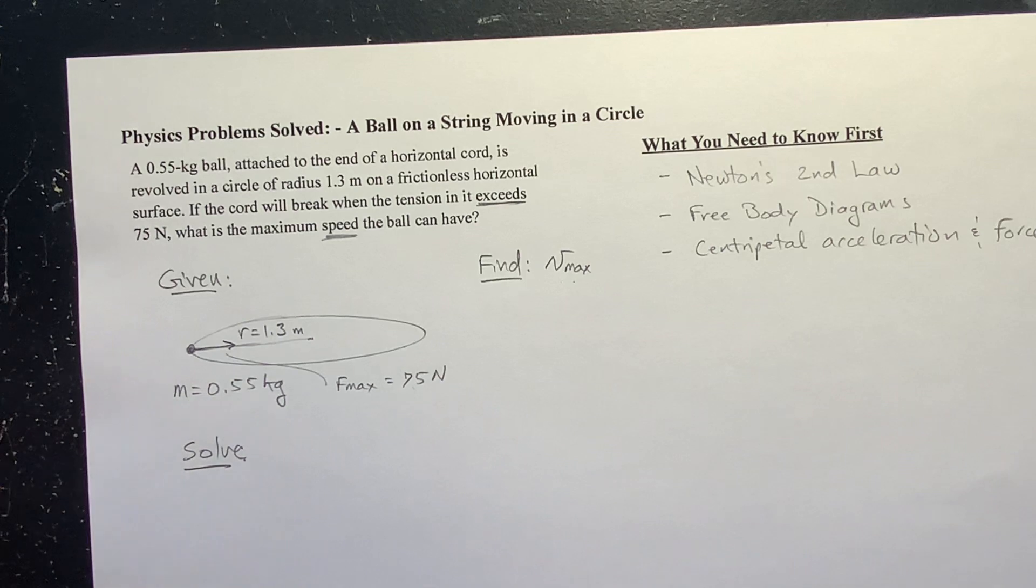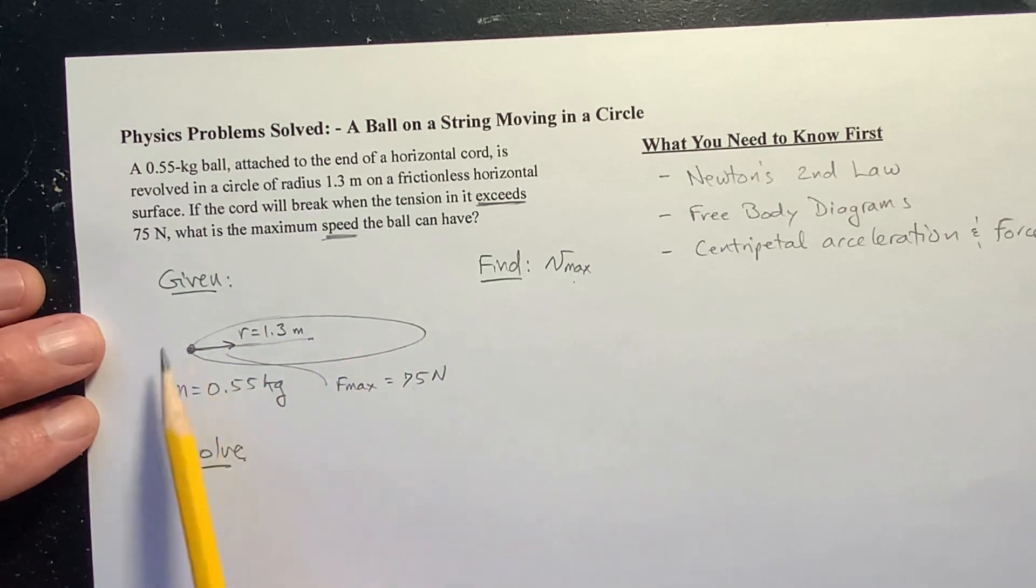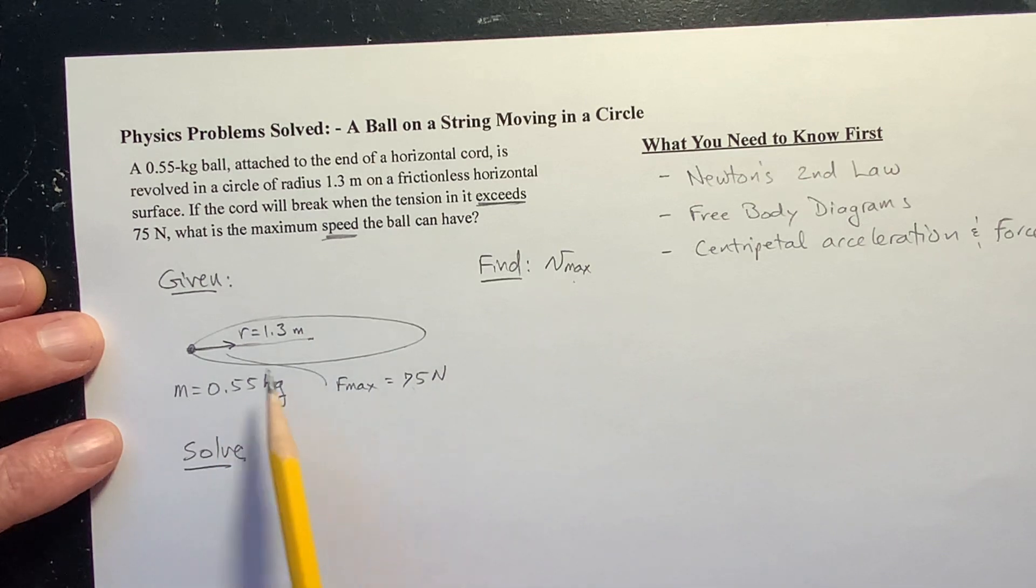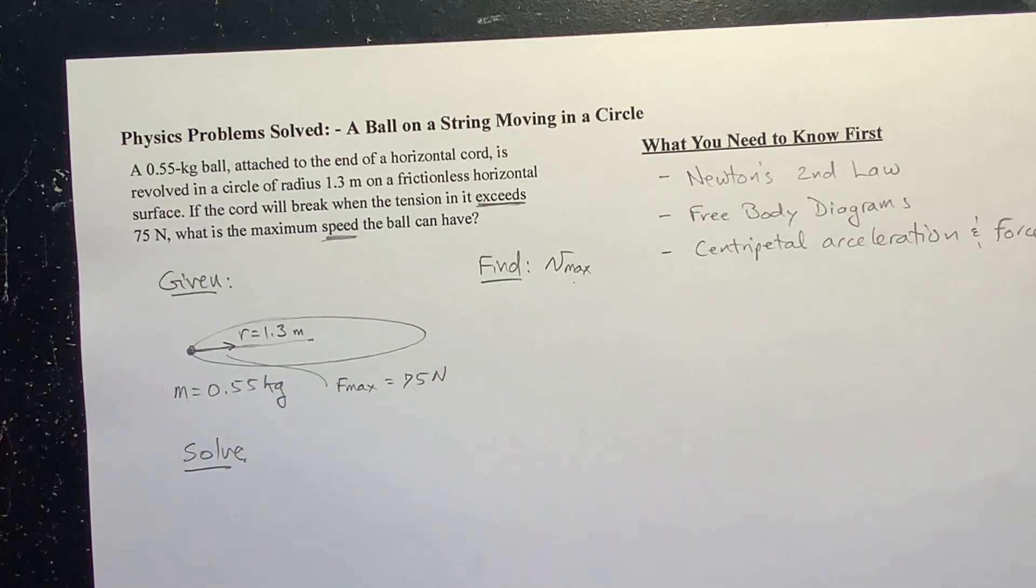And I do recommend when you work a physics problem like this, draw a picture, just a quick sketch of the problem, and then write down what's given in the problem with the variables we use, and then identify what it is we're trying to find. Set the problem up, and that'll really help.